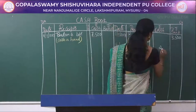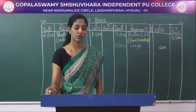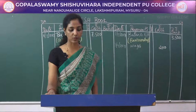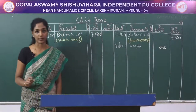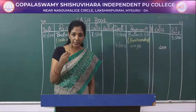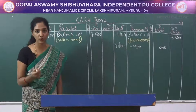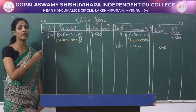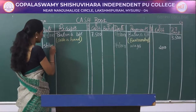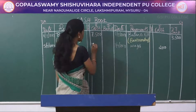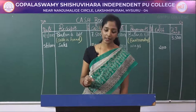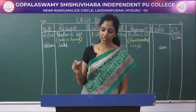The next transaction is 5/7/2017: cash sales rupees 7000. When you sell goods it generates income, so cash comes into the business. When cash comes in it should be recorded on the debit side. As on 5/7/2017 write 'sales' and enter rupees 7000 in the cash column.